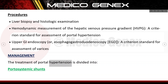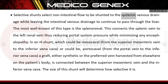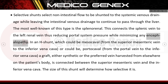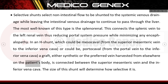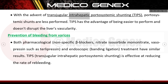The treatment of portal hypertension is divided into portosystemic shunts. Selective shunts direct non-intestinal flow to the systemic venous drainage while leaving intestinal venous drainage to pass through the liver; the most well-known is the splenorenal shunt, which connects the splenic vein to the left renal vein, reducing portal pressure while minimizing encephalopathy. In an H shunt — either mesocaval (superior mesenteric vein to inferior vena cava) or portocaval (portal vein to inferior vena cava) — a synthetic or harvested graft is connected between the superior mesenteric vein and the inferior vena cava. With the advent of transjugular intrahepatic portosystemic shunting (TIPS), portosystemic shunts are less frequently performed.